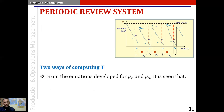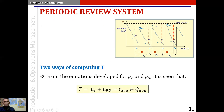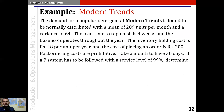From the equations developed for the average reorder point and average safety stock, T can be computed in two ways: first, as the sum of the average safety stock and the average protection period demand; and second, as the sum of the average reorder point and the average order quantity. These are two different ways of computing T.